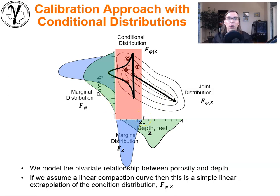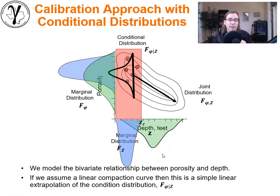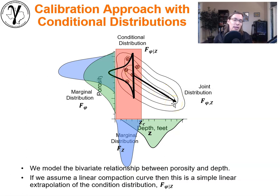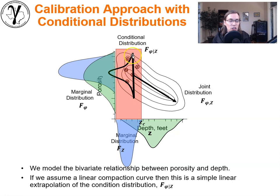If we look at the depth distribution, we have only sampled the shallowest depths. But we have depth available at all locations in the reservoir — it's an easy-to-get spatial feature — so we know depth's real distribution. What we do next is form a relationship between porosity and depth. In this case we'll assume a linear compaction curve: whatever distribution we have at shallow depths, we can extrapolate it along a linear curve, suggesting that as we go deeper we have the same distribution but with the mean shifted lower.